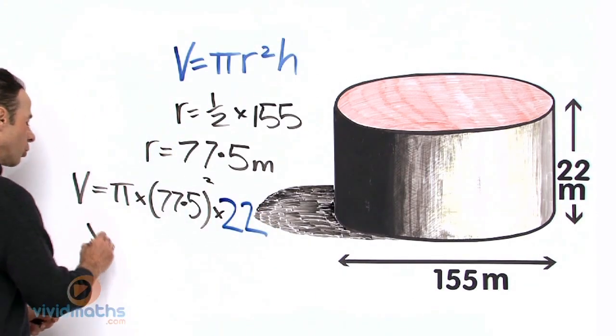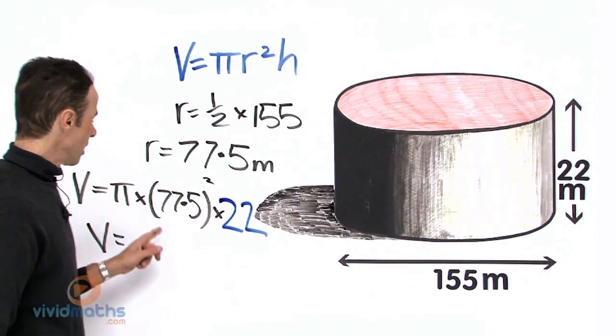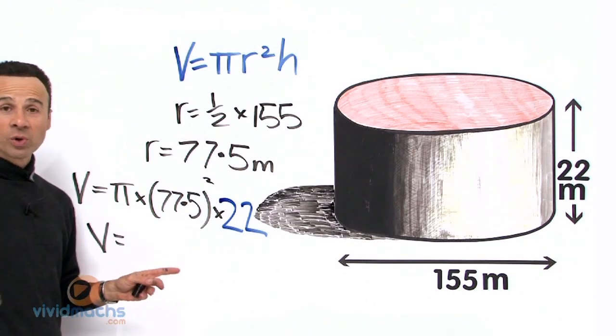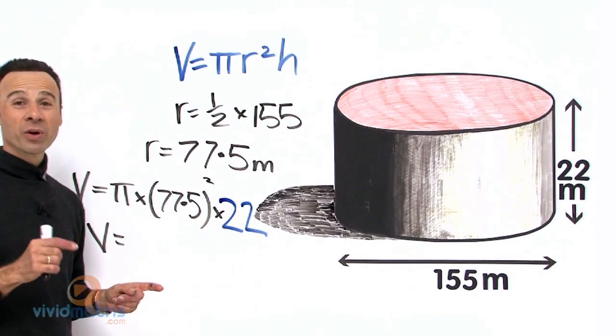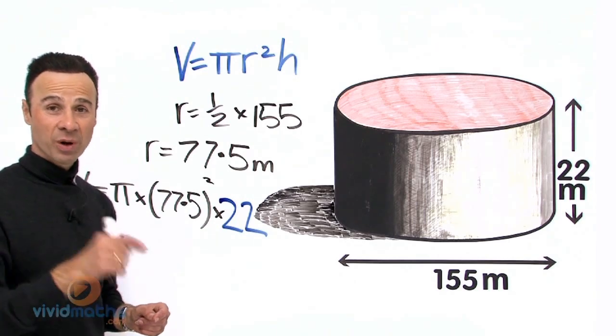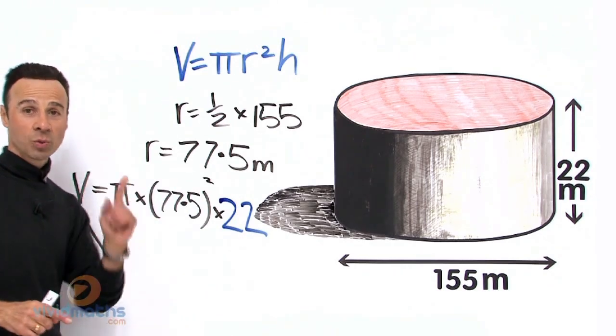Let's put that in our calculator. We can do it in two stages; we can put it all in one here—it still works. So pi, that's 3.14, 22 on 7, whatever you prefer. Pi times 77.5 squared—make sure you press the square button—and then multiply that by 22.